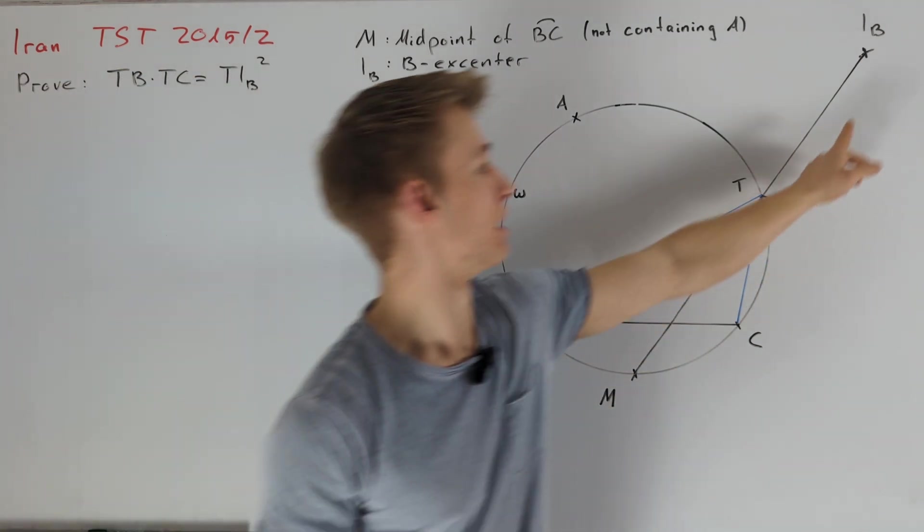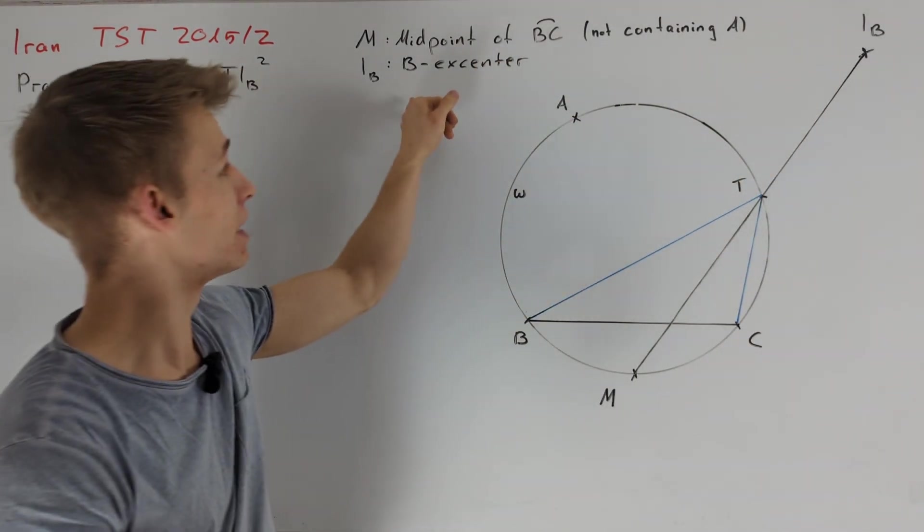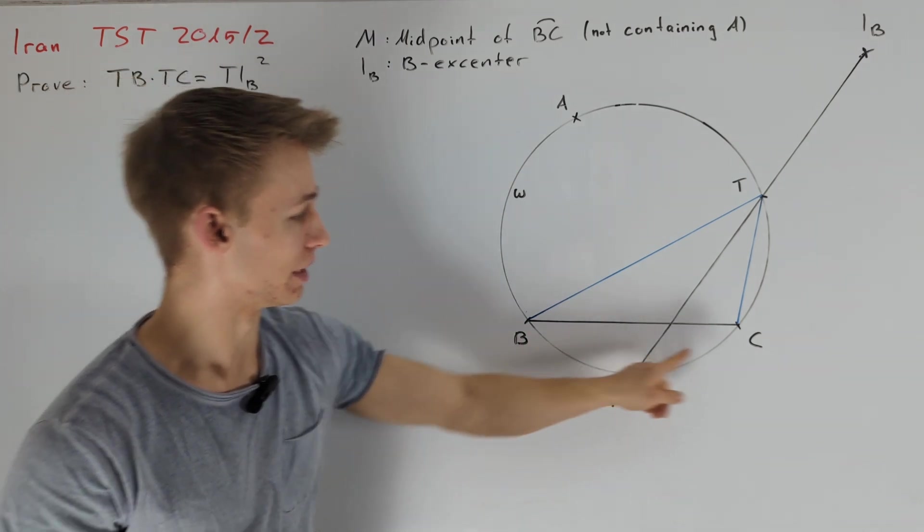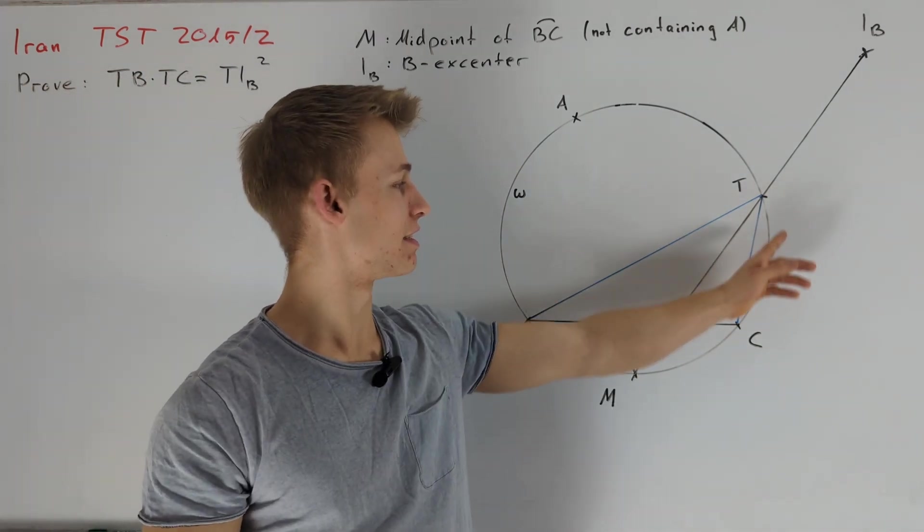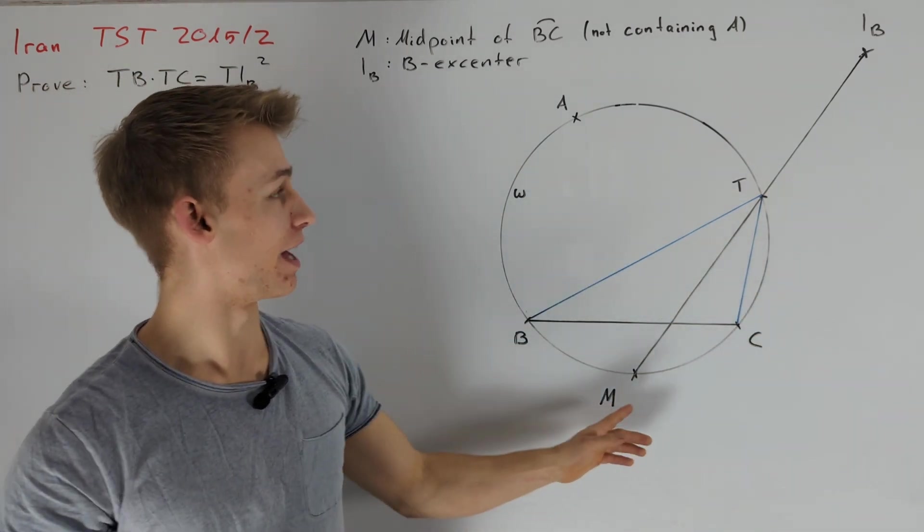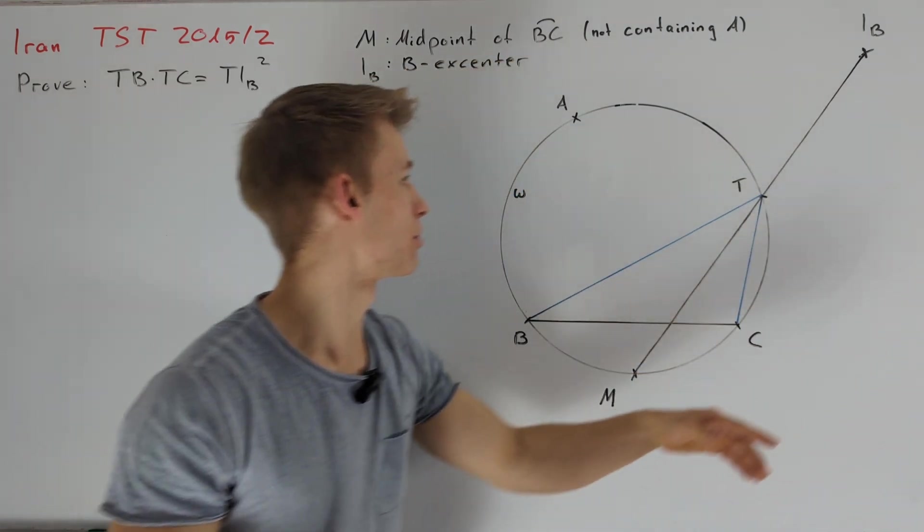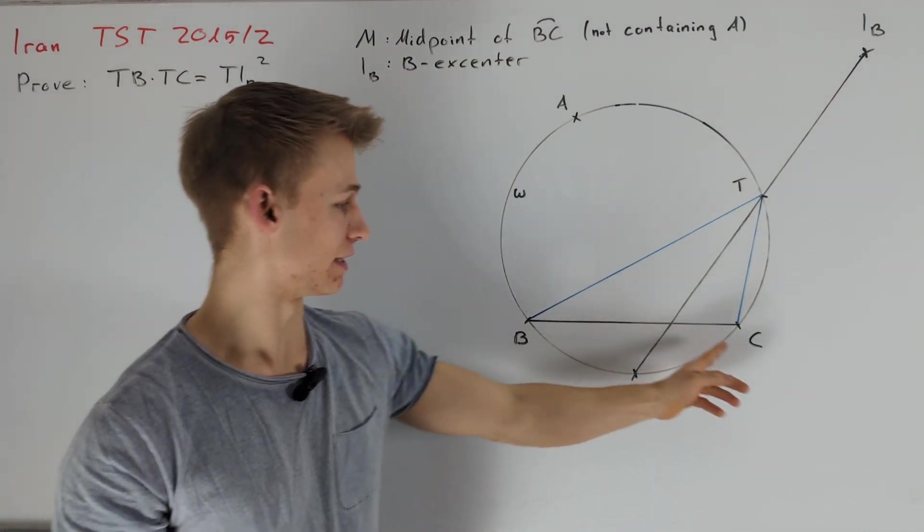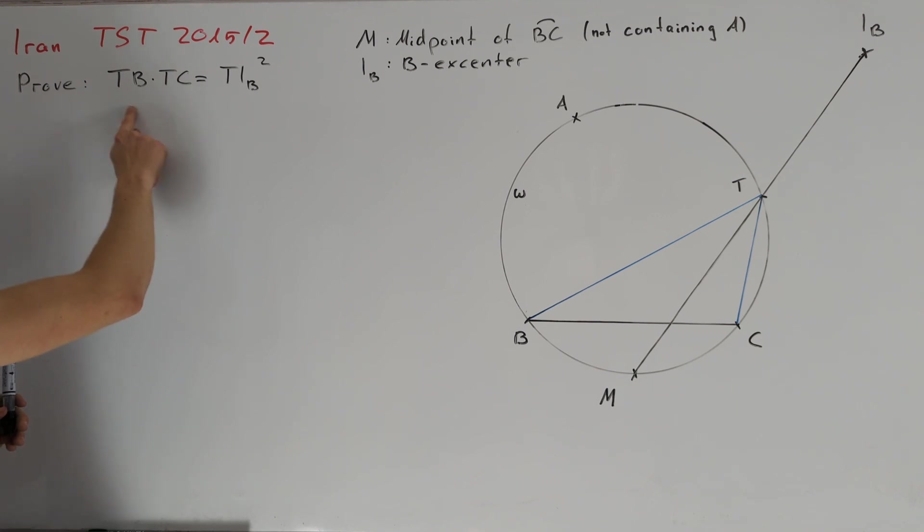Moreover, we define point IB to be the B-excenter of triangle ABC. Point T is defined to be the intersection of M IB with the circumcircle of triangle ABC. Our goal is to prove that TB times TC is equal to TIB squared.